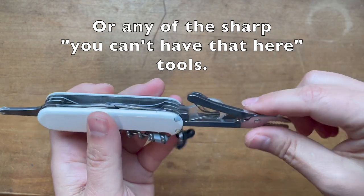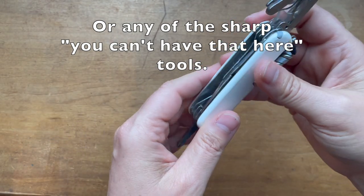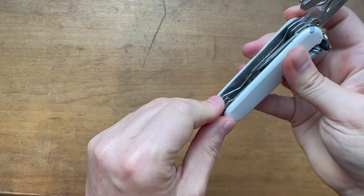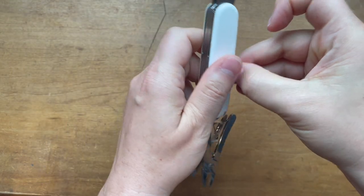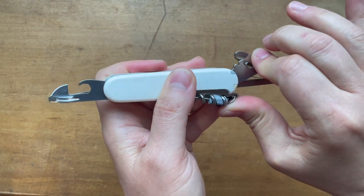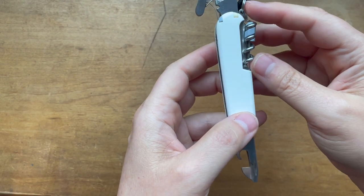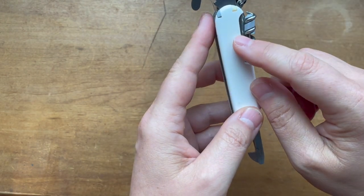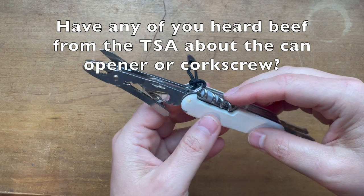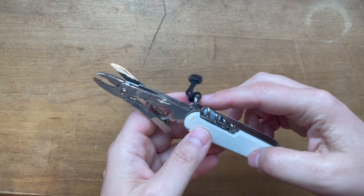And then on this layer I've got of course the can opener with a little mini flathead and larger flathead with the wire stripper and the bottle cap lifter.